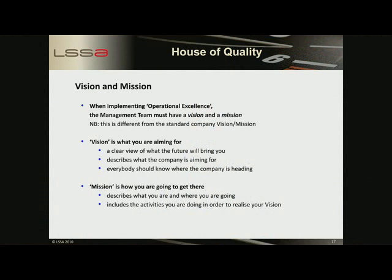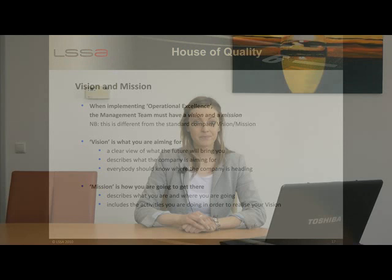By explaining the house of quality to everyone within the organization, we create a base for lean. To use a house of quality in the implementation of operational excellence, it is necessary to distinguish between the vision and the mission of the company. The vision is the view of the future towards which the company is aiming, and everyone should understand it. The mission describes how management believes the company will achieve this, by describing the activities required to realize the vision.